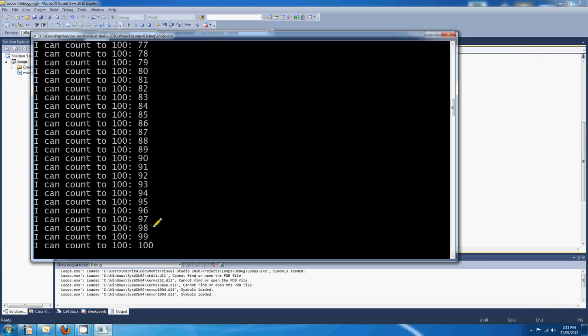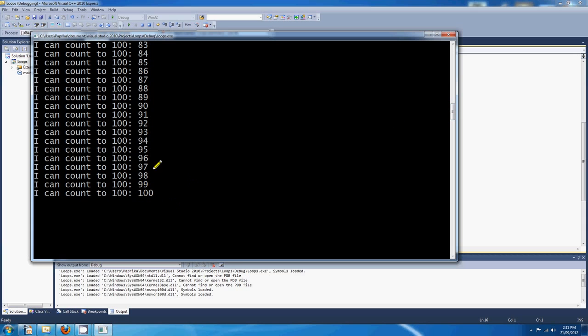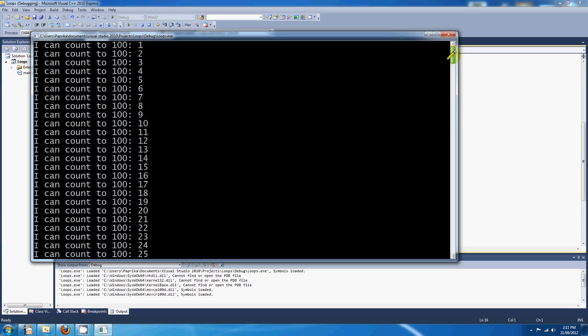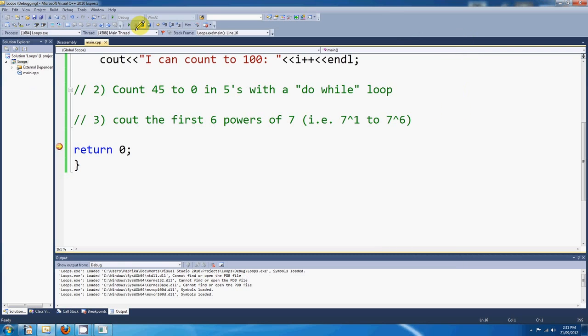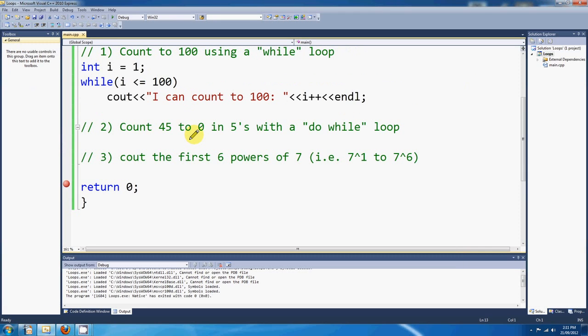Ah, there we go. I can count to 100. And it does too, to prove it. 1, 2, 3, 4, 5, 6, 7, 8, 9, all the way down to 100. So that's how you would get a computer to count to 100, exactly the way a human would if you ask them to. Humans don't tend to start with 0. They start with 1.